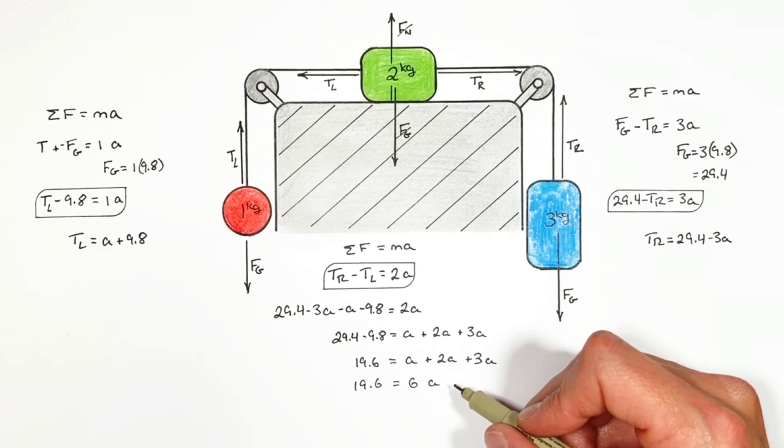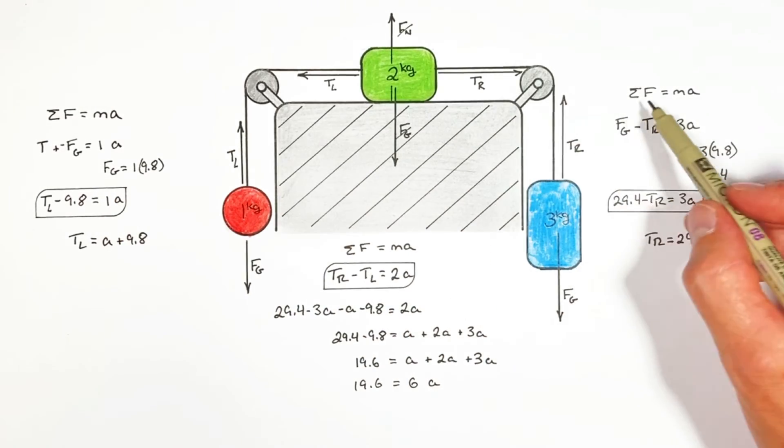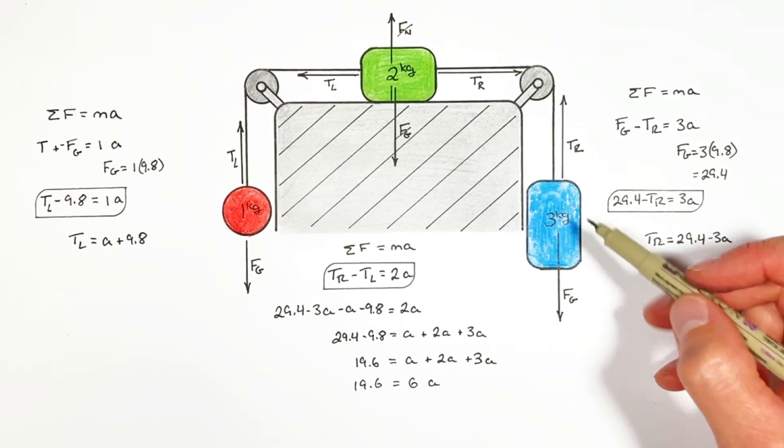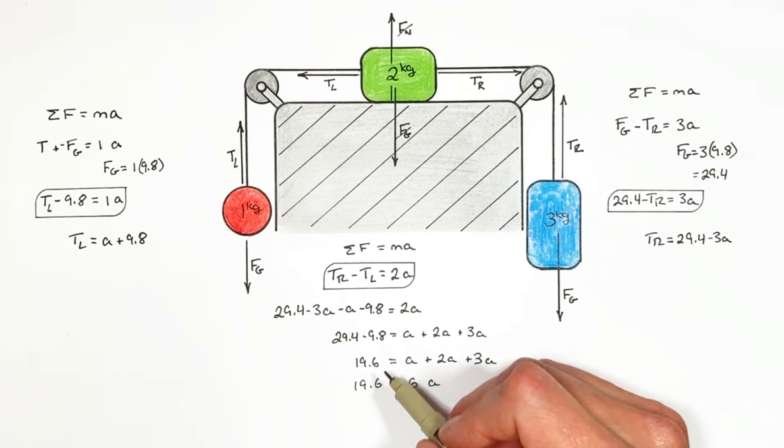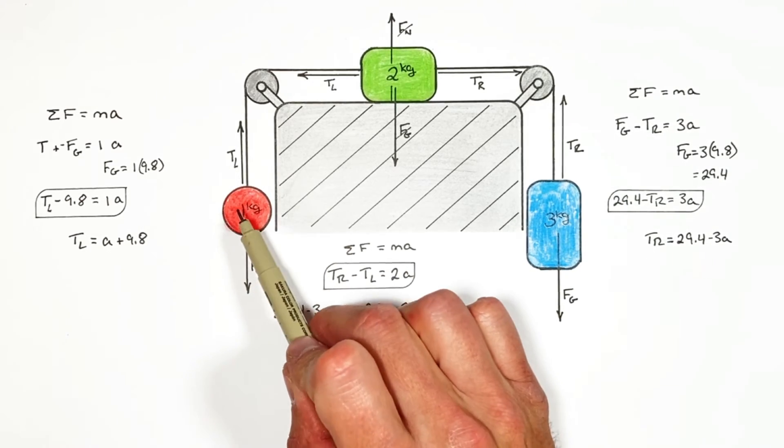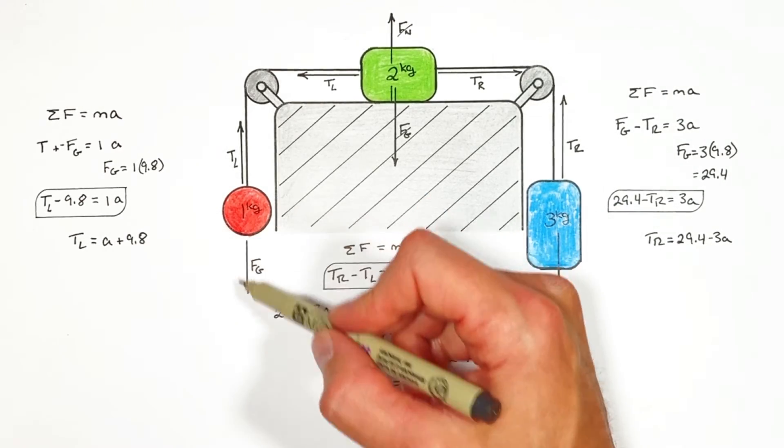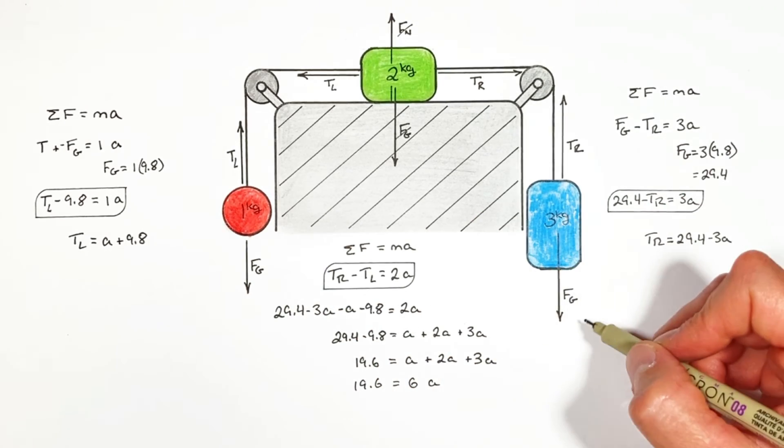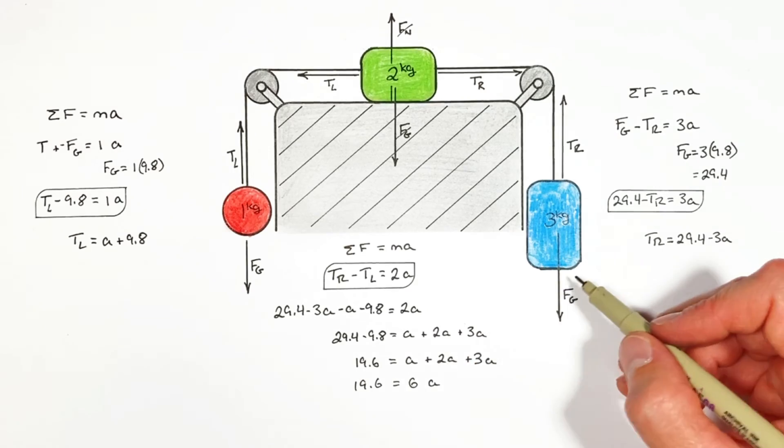Now I want to pause right here before I solve for A and show you something. Ultimately what we've done is we've looked at all the forces acting on all the blocks in this entire problem. And look at what it's boiled down to. If you look at this problem as a tug of war between this block and this block. We have this force by gravity over here at 9.8 Newtons. And the force by gravity over here 29.4 Newtons.